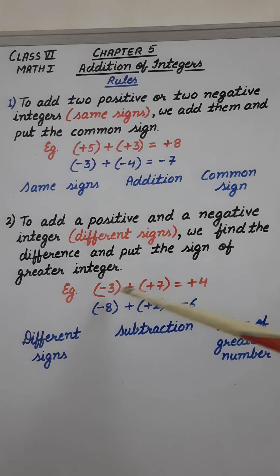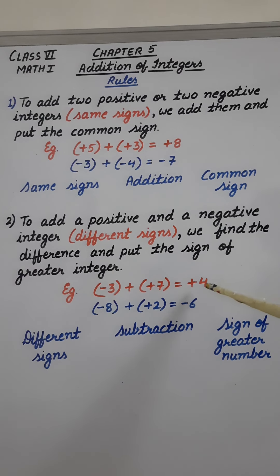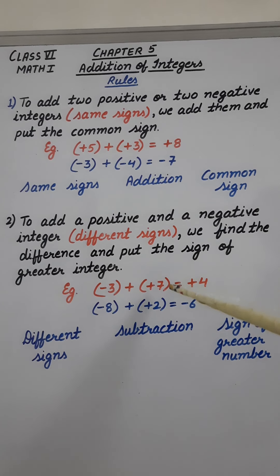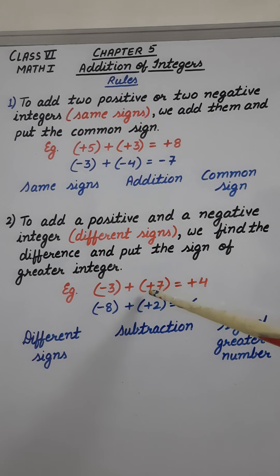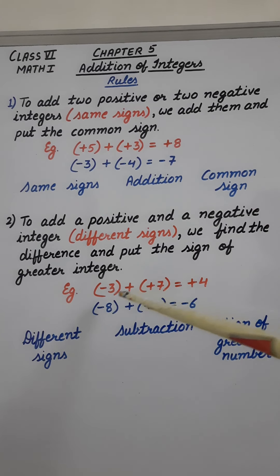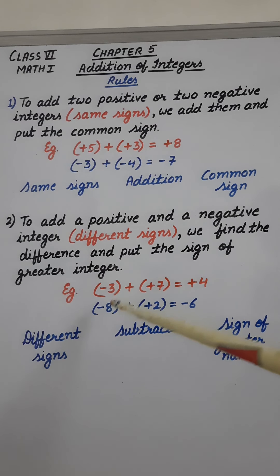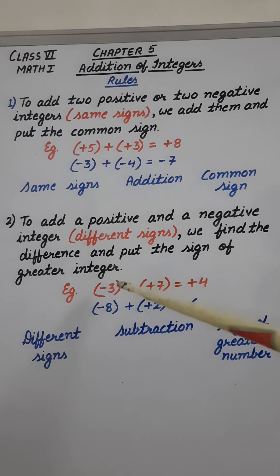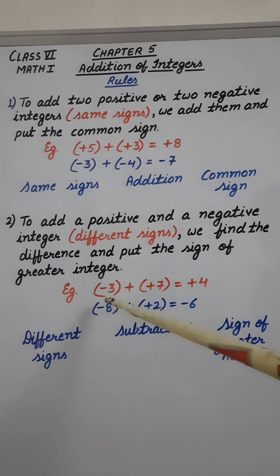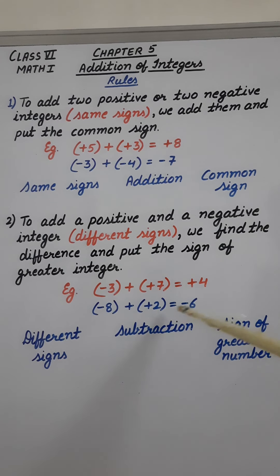Let's review. In the first example, one is minus 3 and one is plus 7 — different signs, so we do subtraction. The sign of the greater number: 3 and 7, the greater is 7, which has a plus sign, so the result is plus 4. In the second example, minus 8 plus plus 2 — again different signs, so we do subtraction. The greater number is 8, which has a minus sign, so that sign comes in the answer.